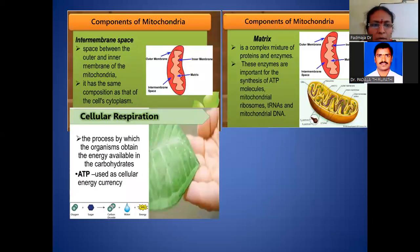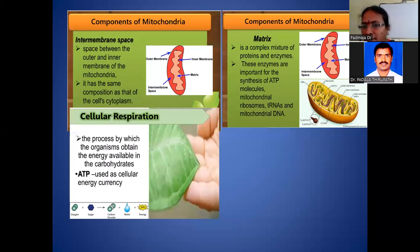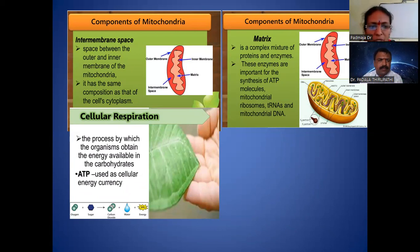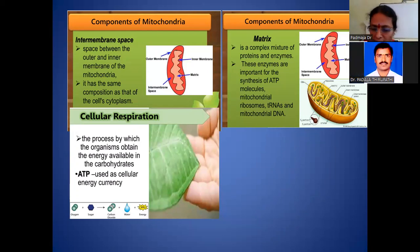The space between the outer and inner membrane of mitochondria is called the intermembrane space (perimtochondrial space), which has the same composition as the cell cytoplasm. The matrix is bounded inside the inner membrane and is a complex mixture of proteins and enzymes essential for respiration, including enzymes important for ATP synthesis, mitochondrial ribosomes, transfer RNAs, and mitochondrial DNA. Because they contain their own DNA, chloroplasts and mitochondria are considered semi-autonomous cell organelles.